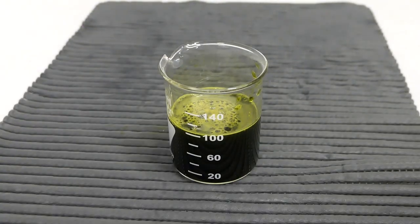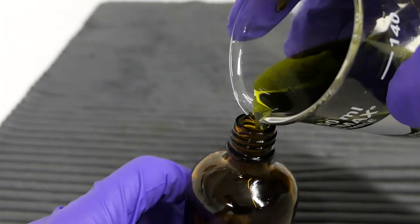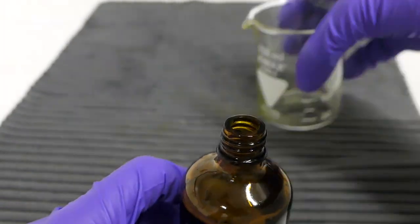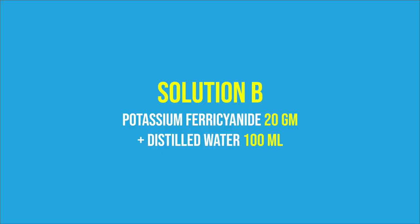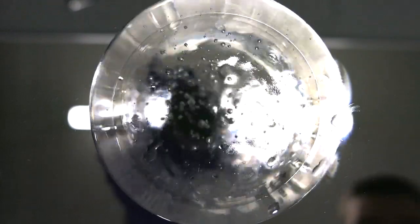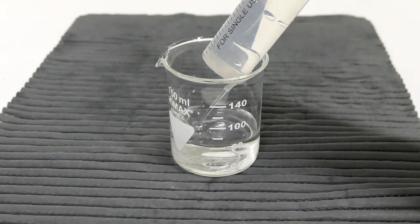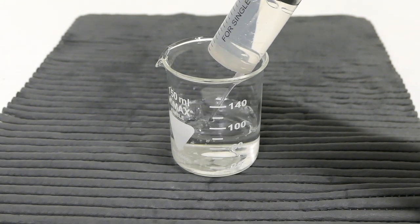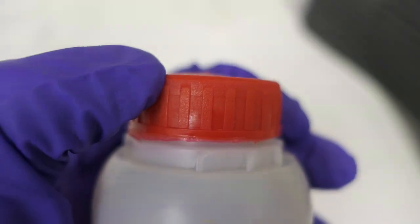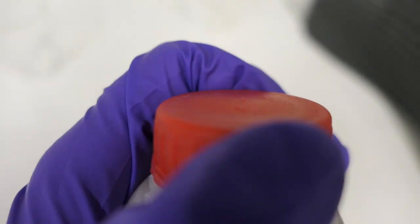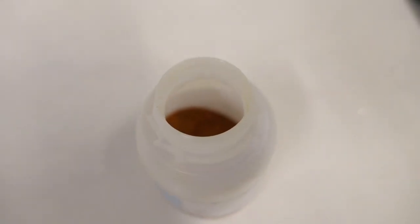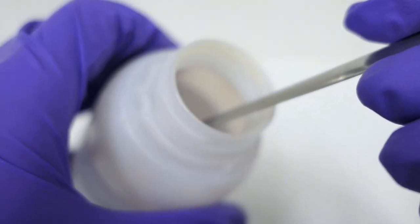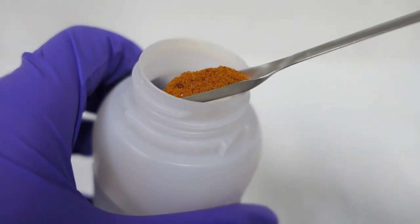When you are done mixing, you can put solution A into the storage bottle. I recommend using brown glass in order to prevent bacteria growth. Next up is solution B. You can start again by measuring the distilled water and weighing 20 grams of potassium ferricyanide.